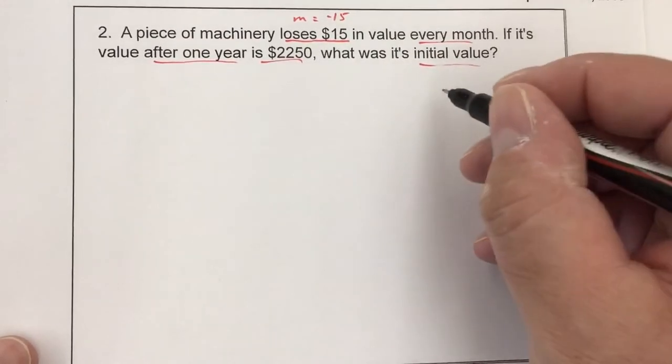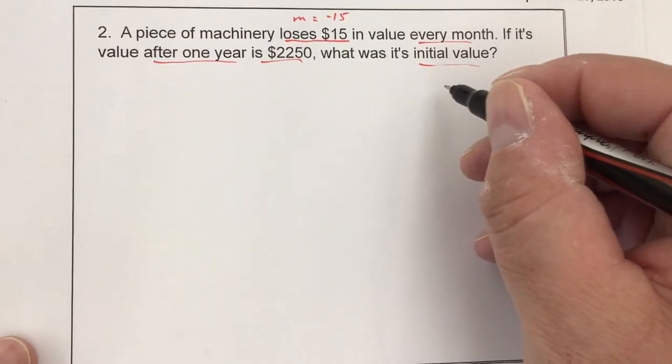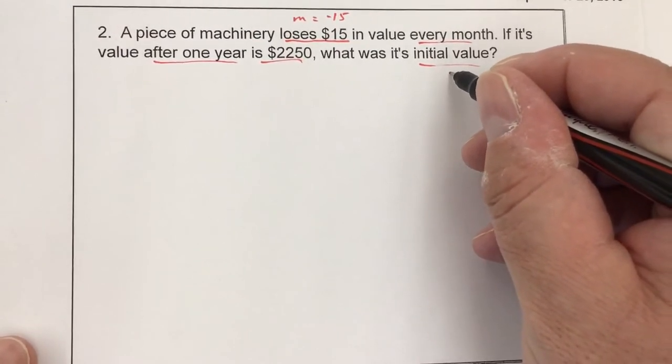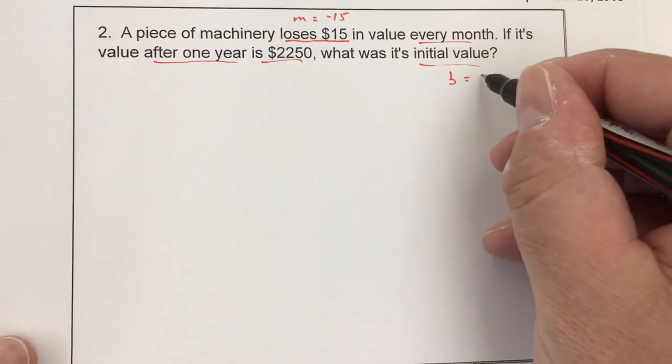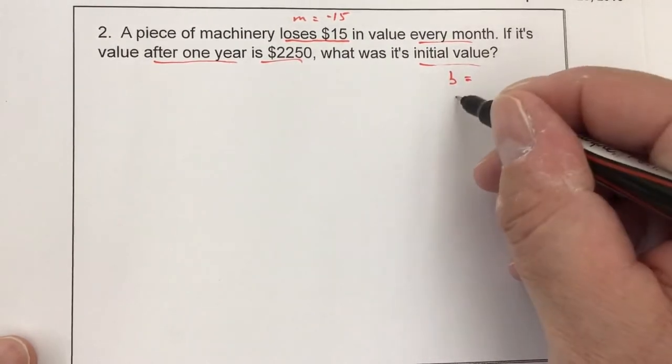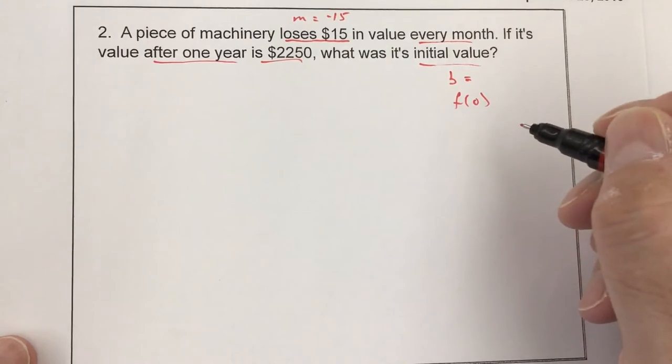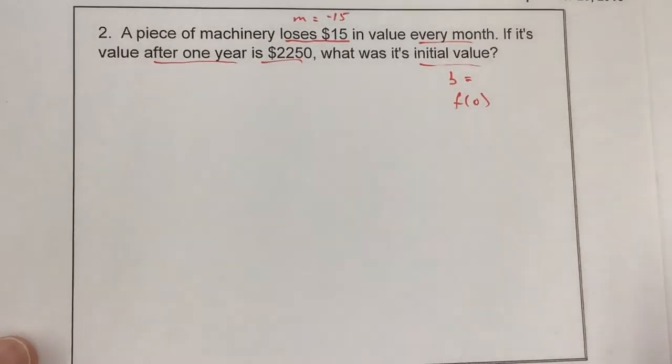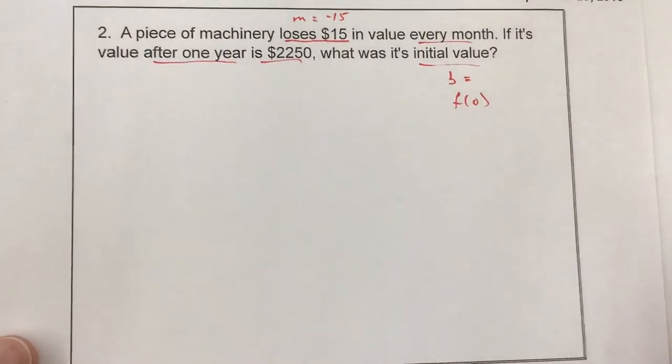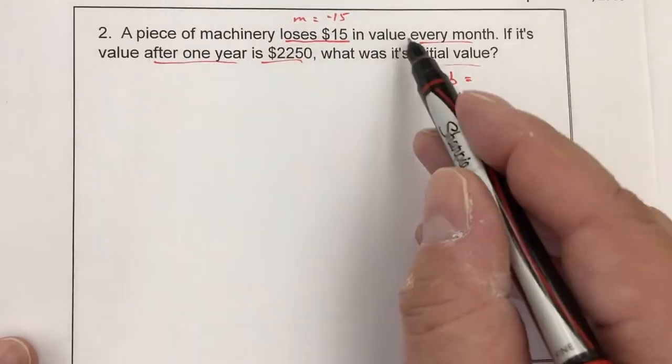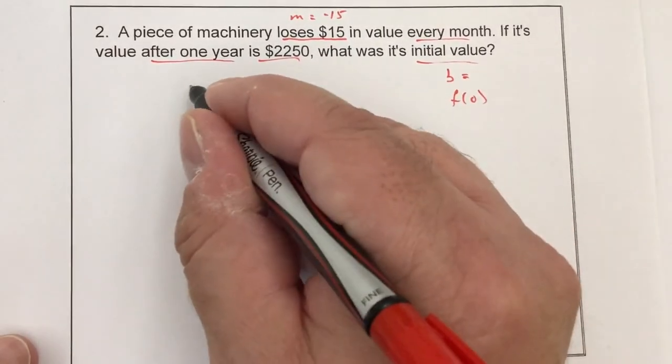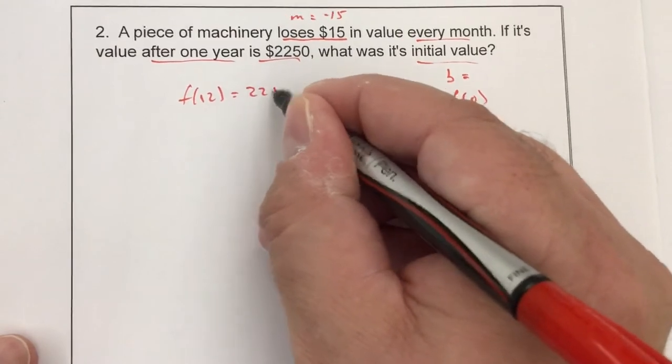So what I do know is this is my slope. And since I'm losing $15 every month, it's negative 15. I want to find its initial value. The initial value is always the y-intercept, or f(0). This is after one year. Well, this is every month.